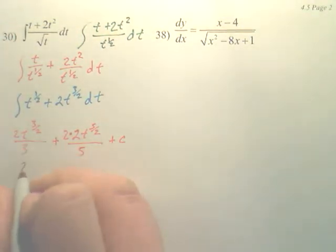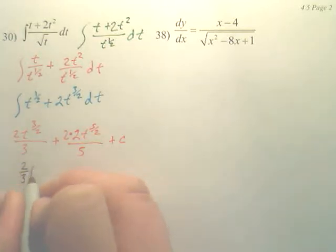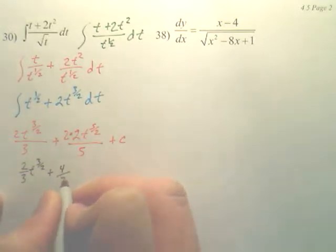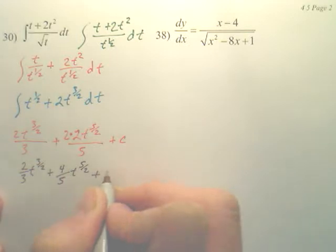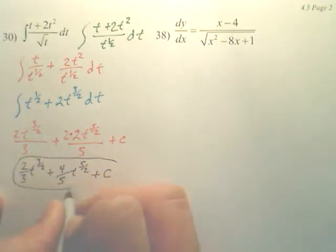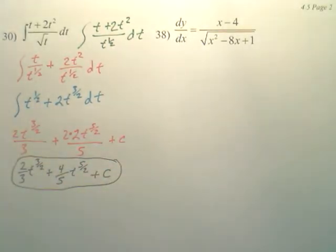So my answer simply is 2 thirds t to the 3 over 2 plus 4 fifths t to the 5 over 2 plus c. A lot simpler.